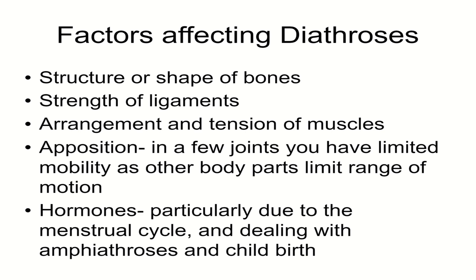Hormones — particularly during the menstrual cycle and during pregnancy — actually relax the tendons, specifically to loosen up the pubic symphysis. The pubic symphysis actually expands during pregnancy in order to enlarge the birth canal and provide more flexibility in the hips for birth to take place. This is also why we see that characteristic pregnancy waddle, because the pubic bones are spreading apart and it affects the pregnant person's gait — their hips are now wider and their legs are displaced as a result.